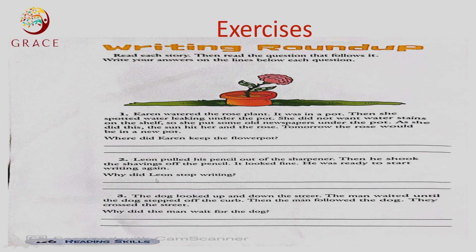Why did Leon stop writing? He needed to start writing again. Why did Leon stop writing? Stopped — that was a short vowel 'o', doubling the final consonant. So he can't keep writing because his pencil needed to be sharpened. Because he needed to sharpen his pencil. Both are correct: he needed to sharpen his pencil, or his pencil needed to be sharpened.